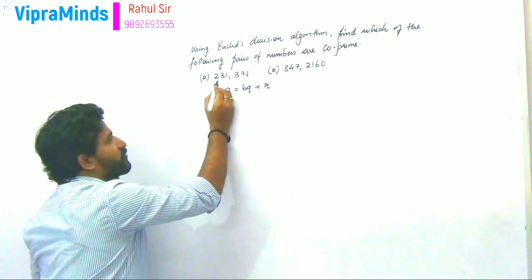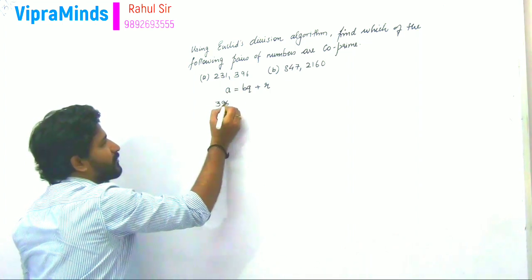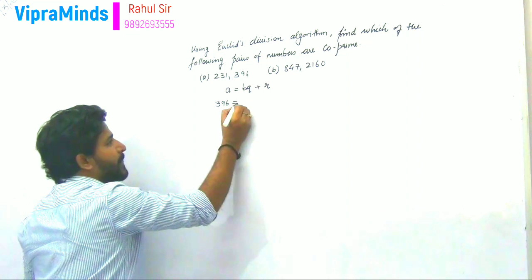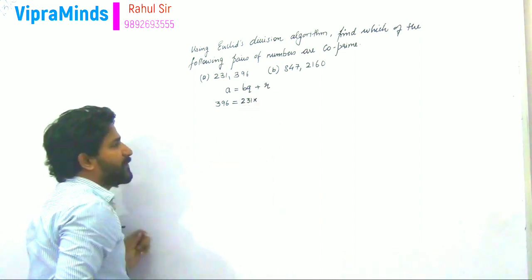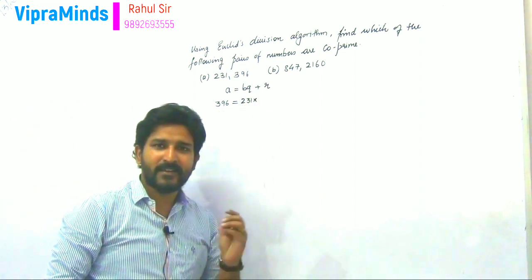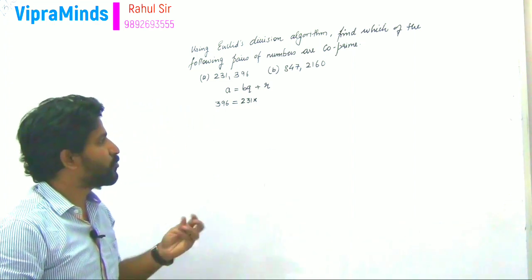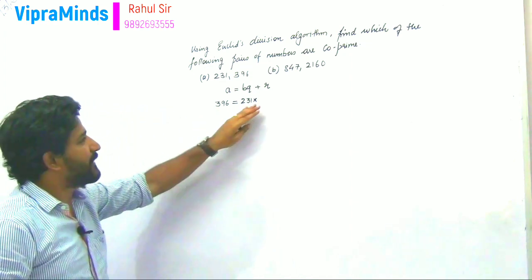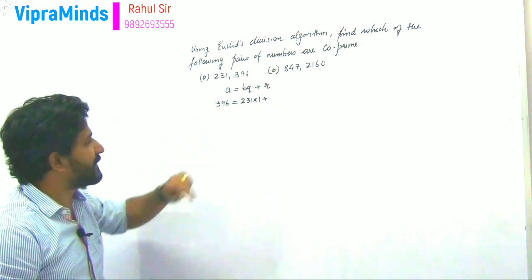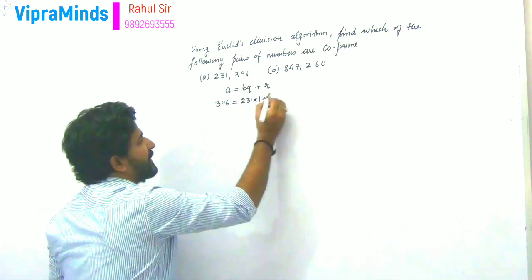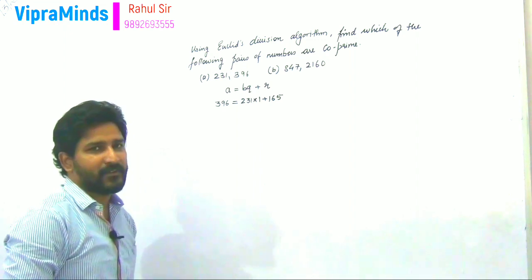If I take the example of 231 and 396, so I take 396 as the greater number — that is A — and 231 as the divisor. That is: A = 231 × Q + R. Now I need 396 or a smaller value. 231 into 1 gives 231. So 396 minus 231: 6 minus 1 is 5, so 396 minus 231 equals 165. Now the remainder is 165.